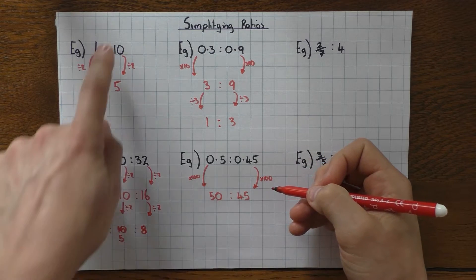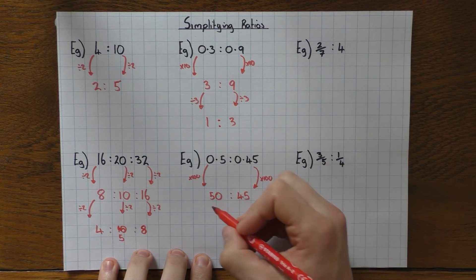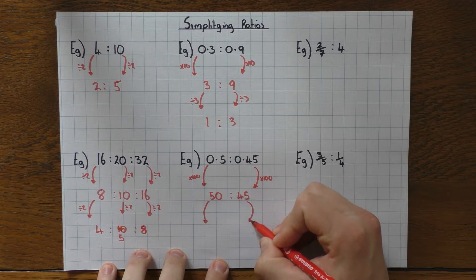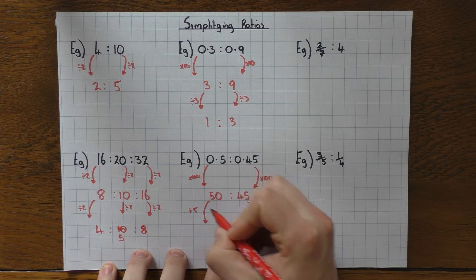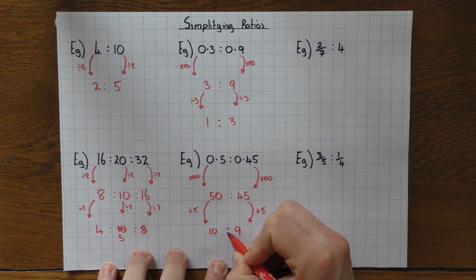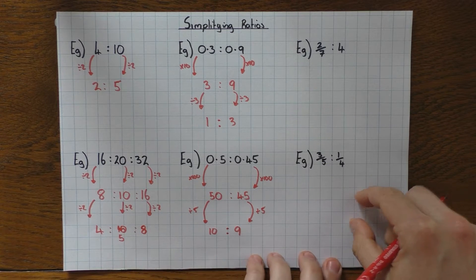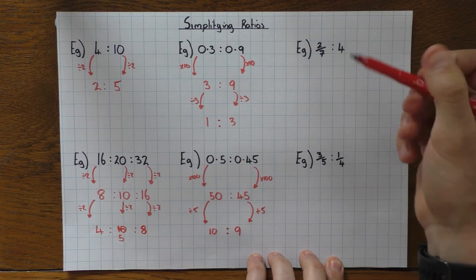Now whole numbers. Now we can do the same thing we were doing here. What number goes into 50 and 45? Hopefully you can spot that 5 does, because they're both in the 5 times table. So I'm going to divide both of them by 5, which leaves me with 10 to 9. OK, so that's what you can do with decimals. Convert them into whole numbers and then simplify them like you do normally.